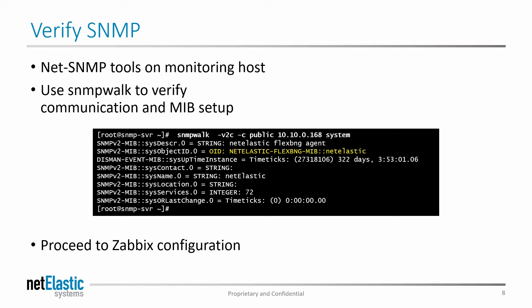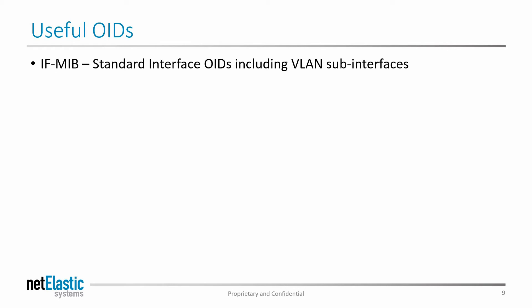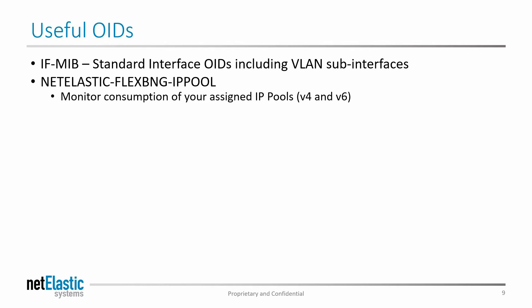Once all that's established, then you can start to add some of these elements to your Zabbix configuration. Some of the useful OIDs that you may want to monitor through Zabbix or any of the management tools that you use: of course, anything in the public interface MIB — that's where you're going to collect any of your upload, download, and operational status for any of the interfaces, including VLAN sub-interfaces that the virtual router is running. More specific to the BNG, we can monitor through the Netelastic Flex BNG IP pool tree any of the consumption of your various IP pools that you've configured. You don't want those to run out, but it might be useful to monitor consumption.